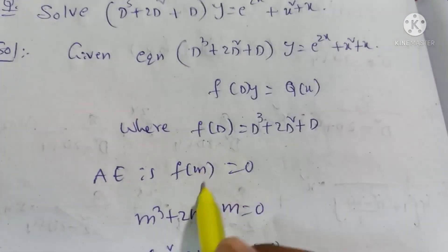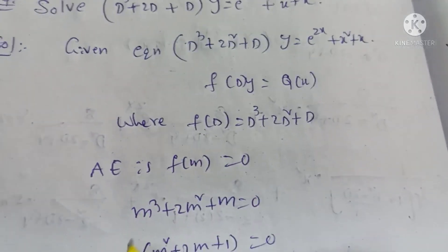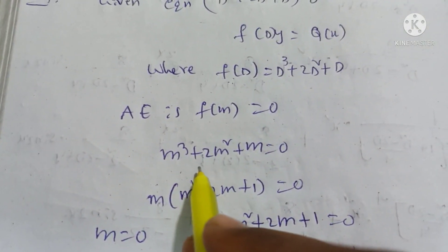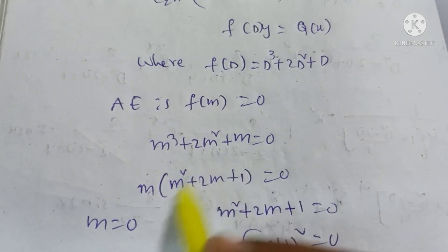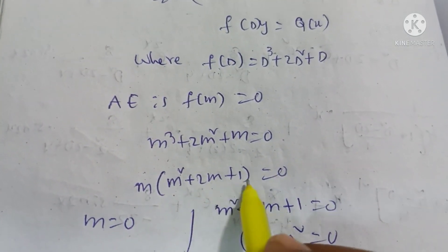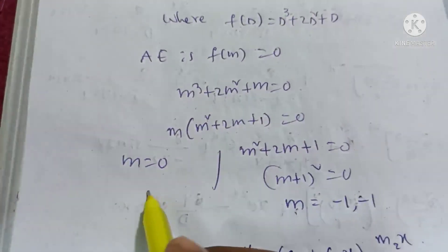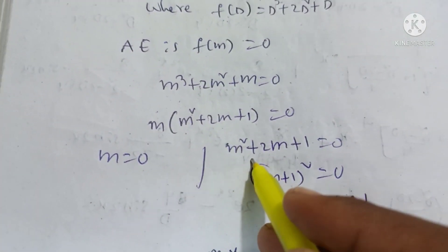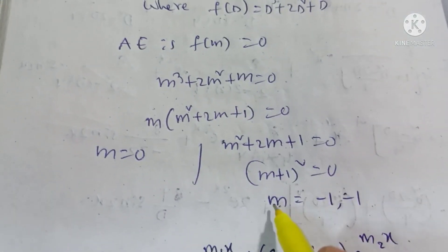Set up the auxiliary equation f(m) = 0. Replacing D with m: m³ + 2m² + m = 0. Taking m common: m(m² + 2m + 1) = 0.